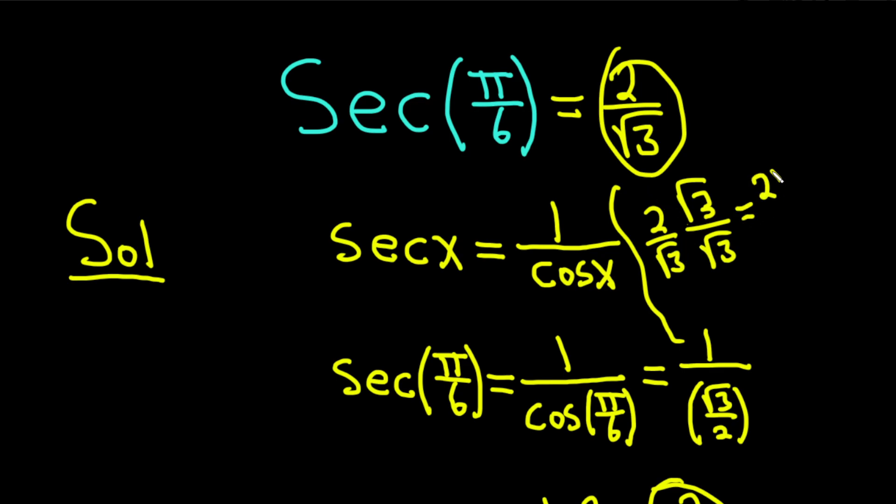So, this is now 2 root 3. It gets rid of the root on the bottom. And then the square root of 3 times the square root of 3 is simply 3. So, that would be another acceptable answer.